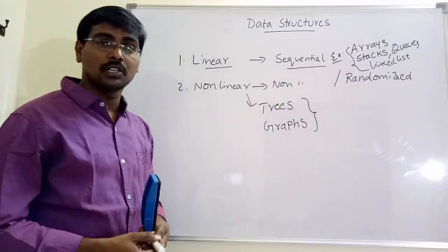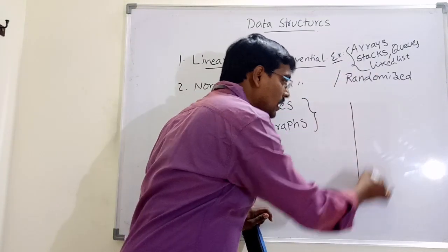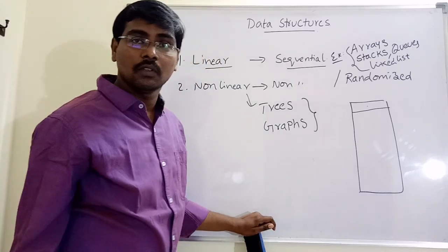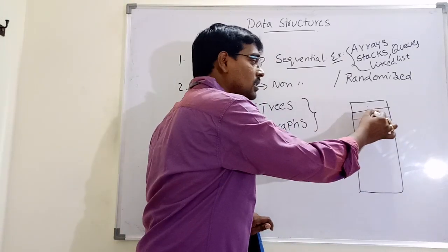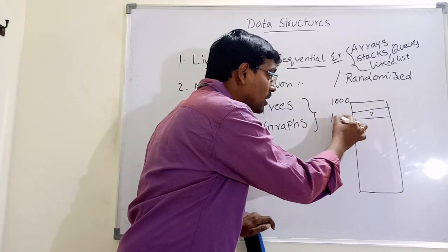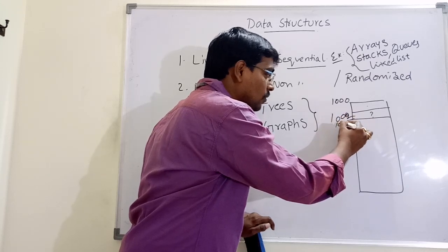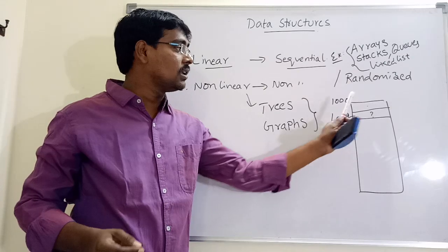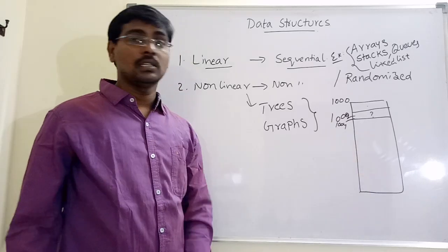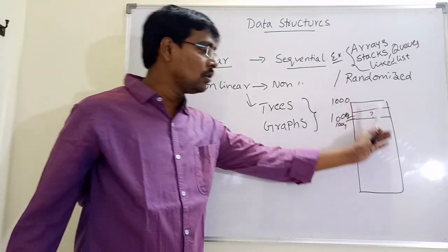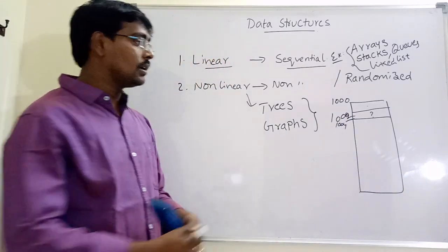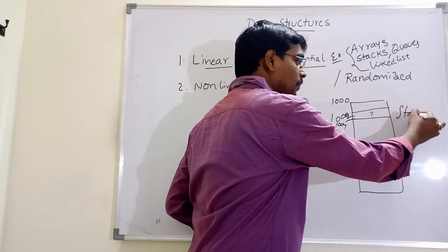Coming to arrays — an array is a linear data structure in which elements are stored in sequential manner. For example, in this array, the first location holds the first element. If the address is 1000 and we are using integers, the next element is at address 1002, then 1004. All elements must be arranged in sequential manner. But array has a disadvantage: fixed memory. Before using the memory, we have to declare how much memory is required — the memory is static.